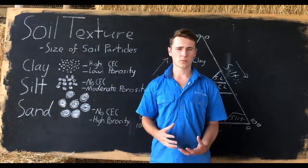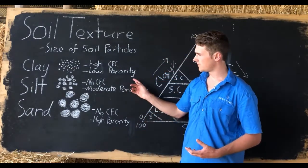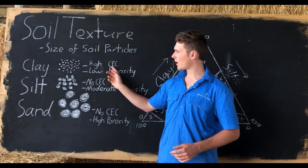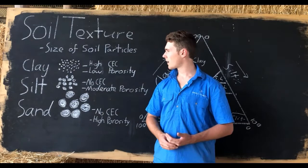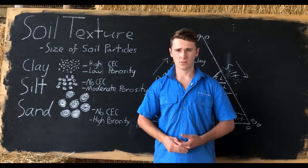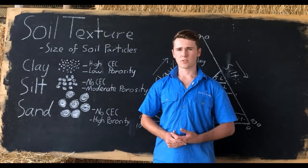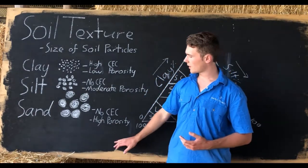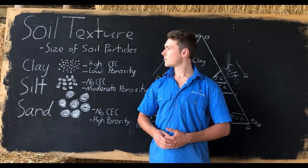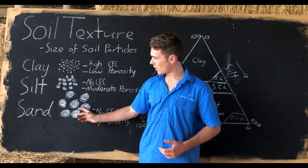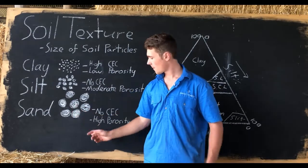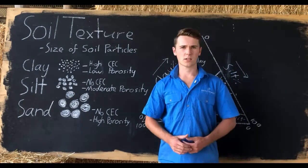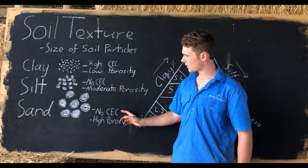Because clay has very little void space, it has a very low porosity. Clay also has a negative electric charge causing it to have a very high cation exchange capacity. This is really important in the exchange of nutrients between our soil and our plant. Sand, on the other hand, is our largest soil particle causing it to have a very high void space. This will cause it to have a high porosity. However, sand and silt don't have an electric charge, causing them to have no cation exchange capacity.